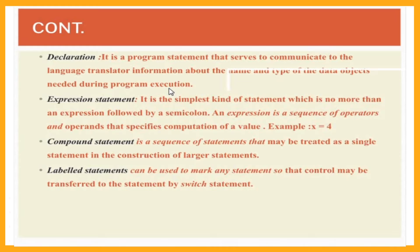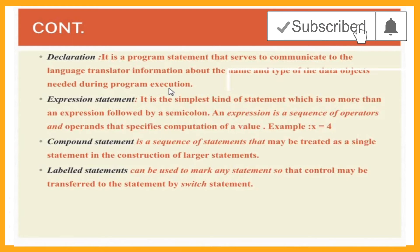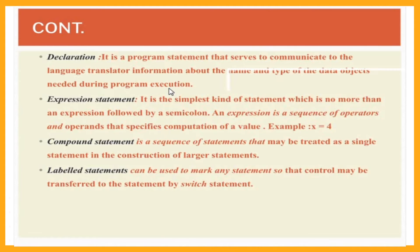The next one is an expression statement. It is the simplest kind of statement, which is no more than an expression followed by a semicolon. For example, a is equal to 5 — that is one expression. x is equal to 4 is an expression statement; x is equal to a plus b — some operation will be performed and that value will be assigned to the left side variable. An expression is a sequence of operators and operands that specifies computation of a value.